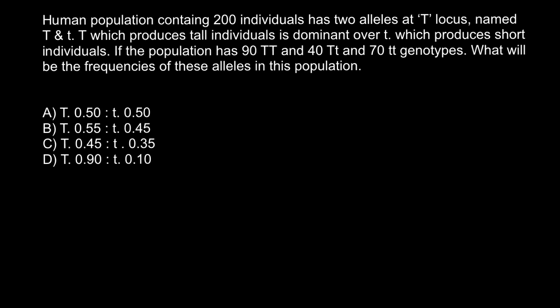Hello and welcome to Nikolai's genetics lessons and the problem of the day. Human population containing 200 individuals has two alleles at the T locus named T and t. Capital T which produces tall individuals is dominant over small t which produces short individuals.